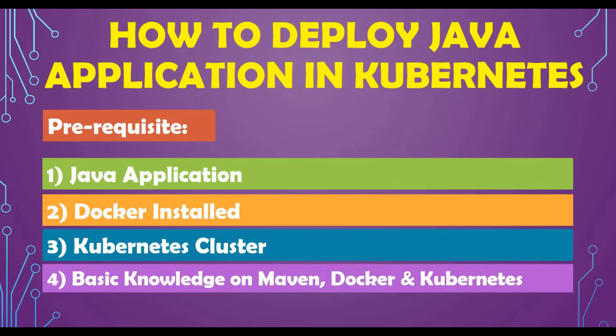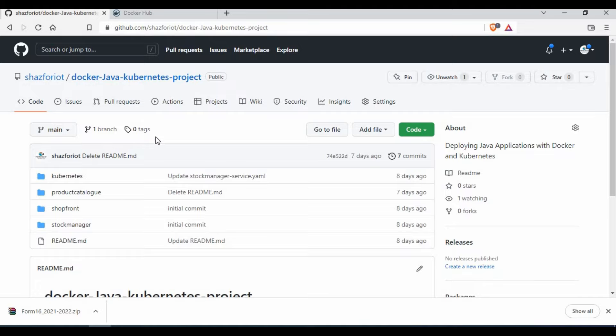You should also have basic knowledge of Maven, because you need to do a build — understanding lifecycle commands like 'mvn clean' or 'mvn install' and what they do. You need some understanding of Docker so you can write Dockerfiles and build images. And you need understanding of Kubernetes so you can write service YAML files and deployment YAML files. I'll be explaining all these things as we go through each component. If you don't know Docker or Kubernetes, I have a complete playlist and full courses on Docker, Jenkins, and Kubernetes you can refer to.